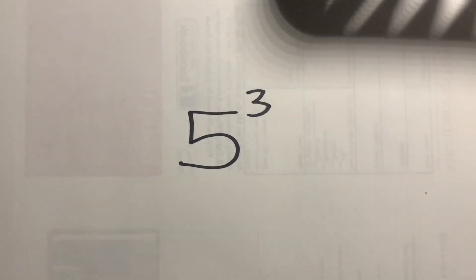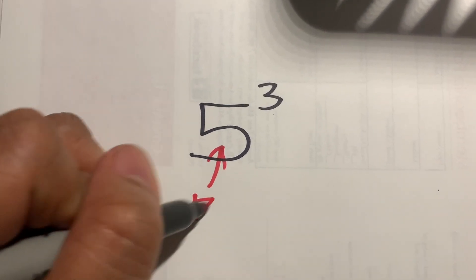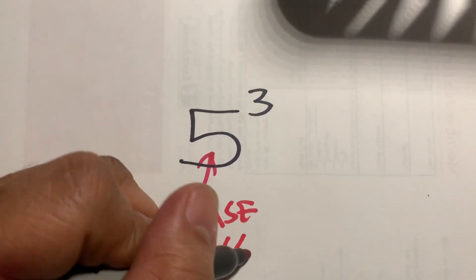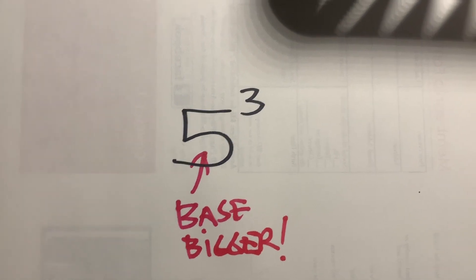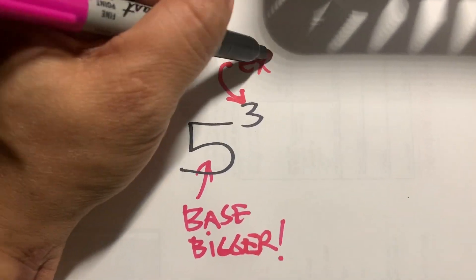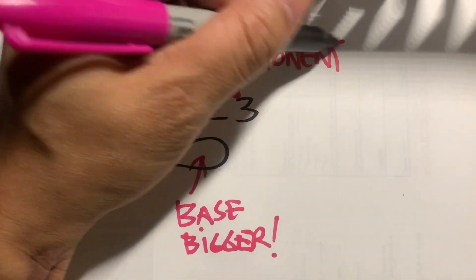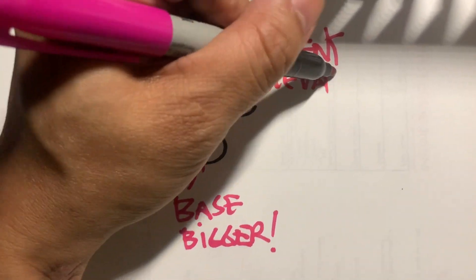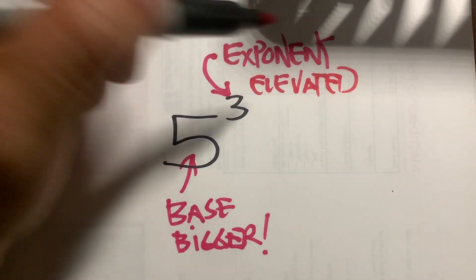An exponent five to the third power, which is the base, and which is the exponent? Think of this as the B base, the bigger number. The bigger number, the base. Think of this as E, the exponent. That's the elevated, elevated number.